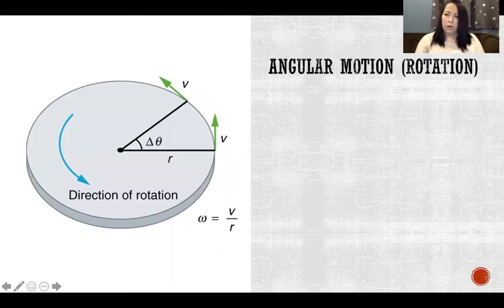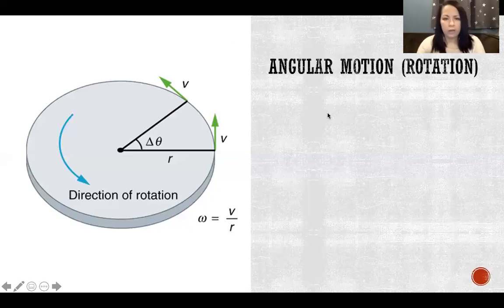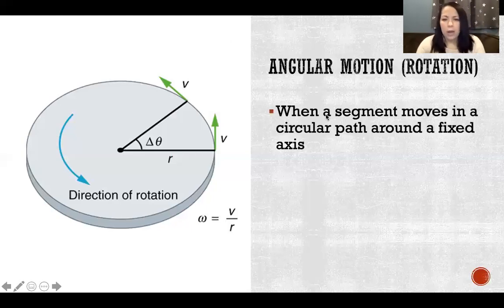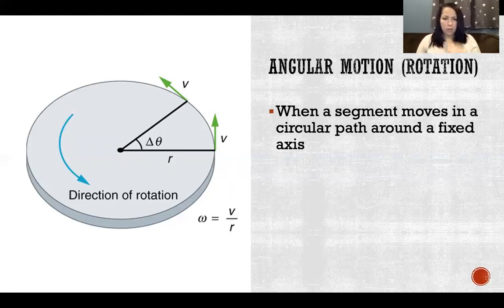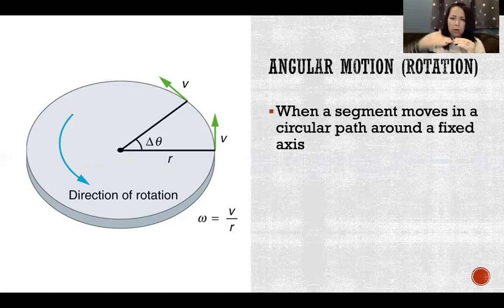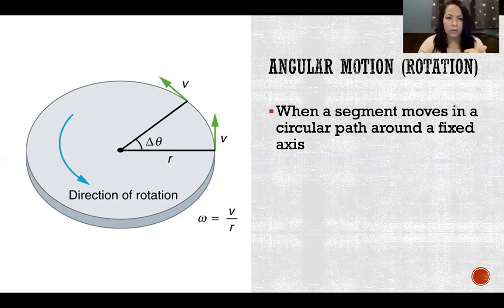Angular motion we also refer to as rotation. It's when a segment moves in a circular path around a fixed axis. The axis remains the same and then the segment is moving around that axis of rotation in a circular path — that's rotation.